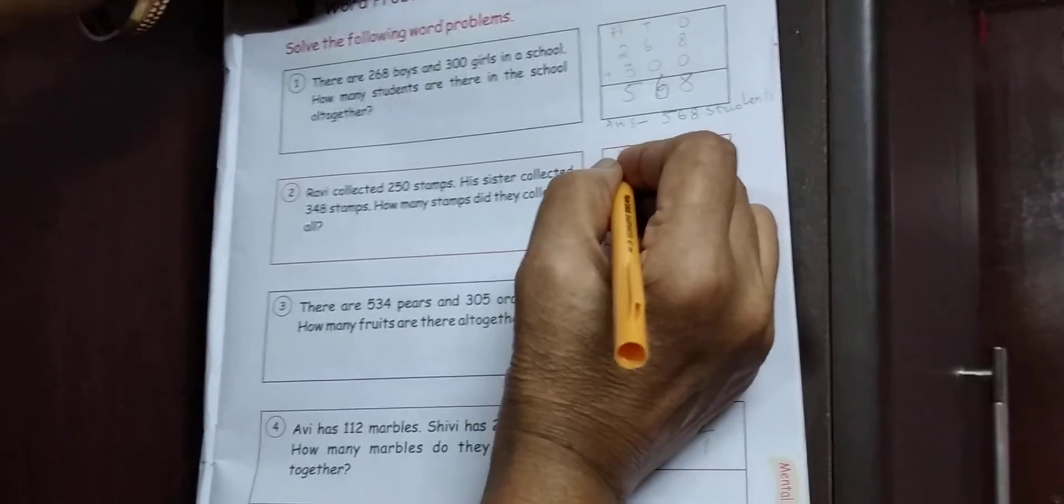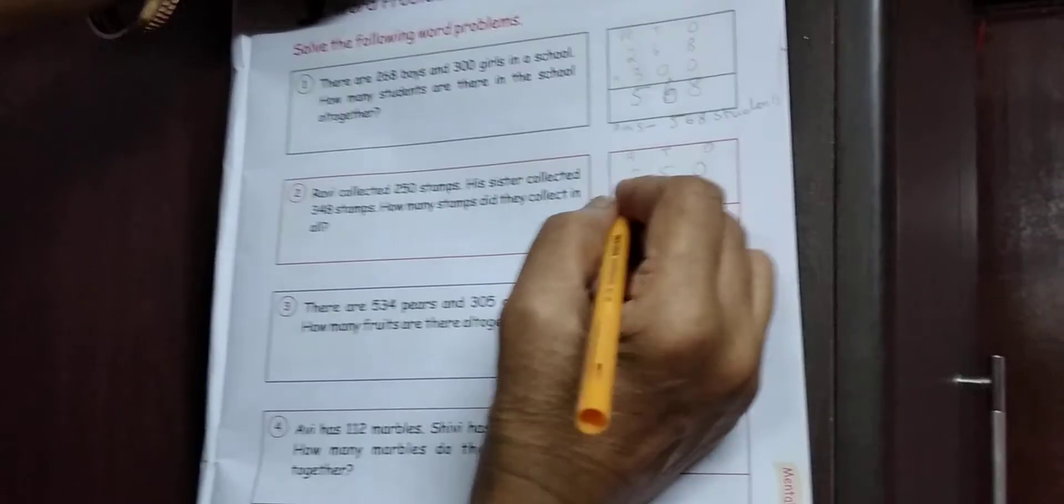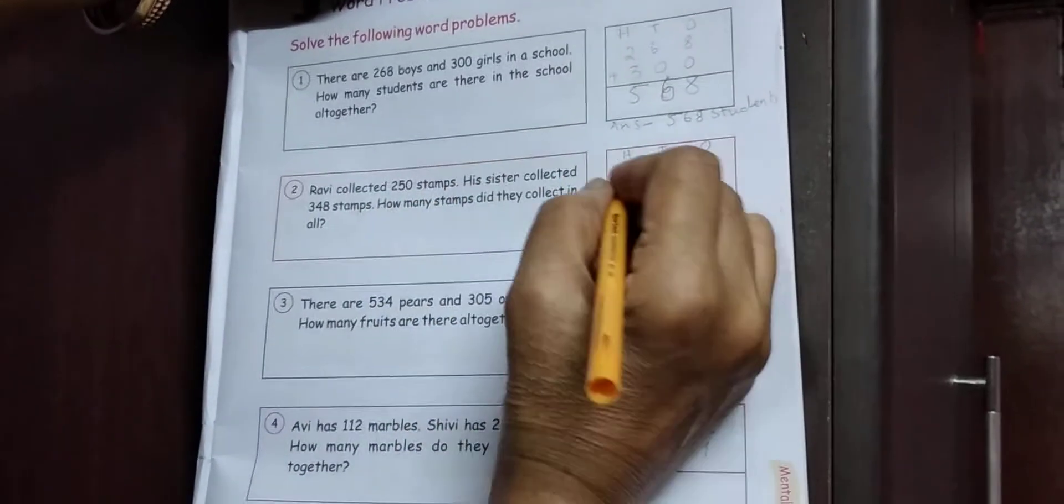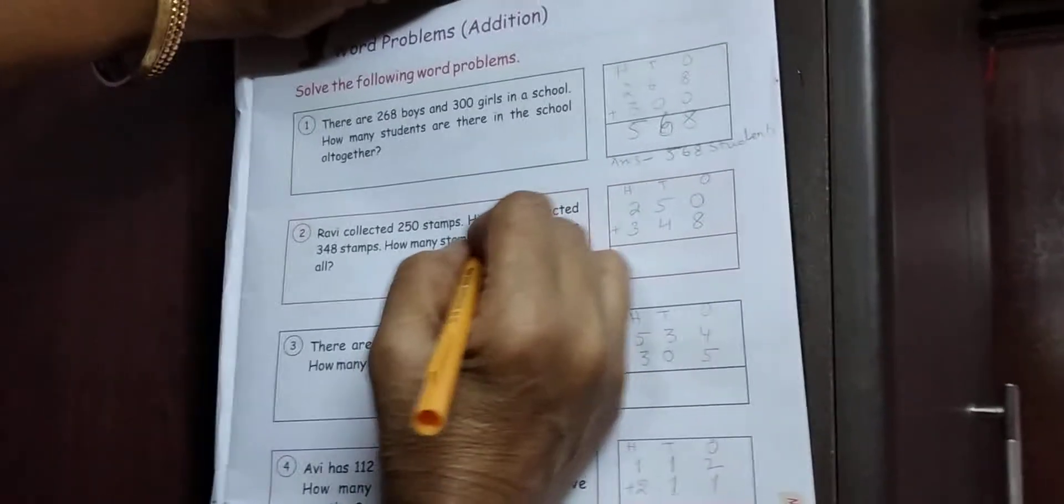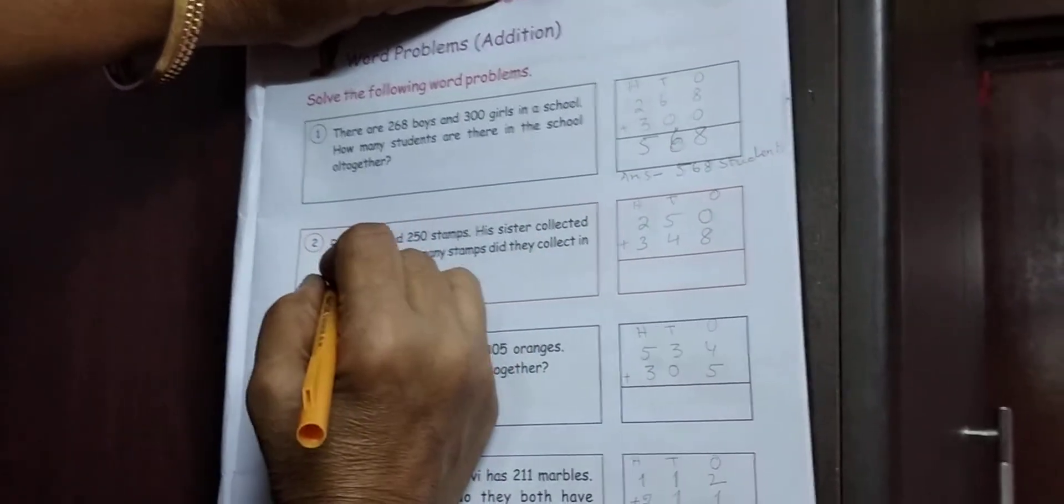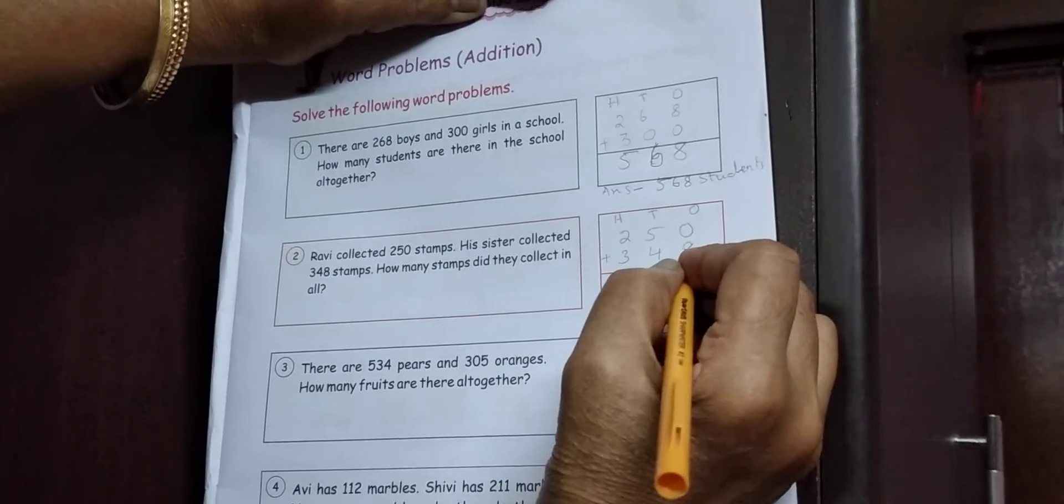H meaning 100, T meaning 10, O meaning 1. 2, 5, 0. 200, 5, 10, 0, 1. 3, 4, 8. 300, 4, 10, 8, 1.